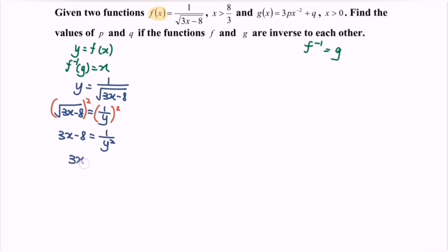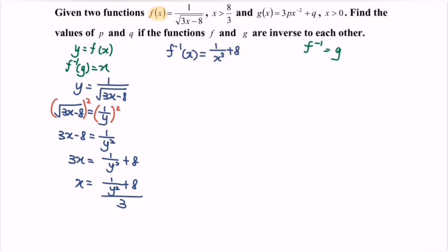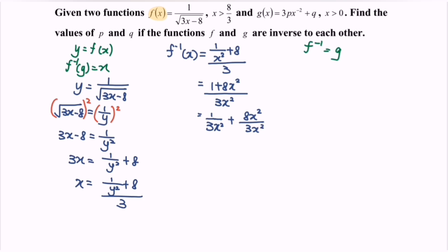Rearrange the situation: 3x is equal to 1 over y squared plus 8. Then x is equal to 1 over y squared plus 8 over 3. So the f inverse is equal to 1 over x squared plus 8 over 3. Rewriting with a common denominator, we get 1 over 3x squared plus 8x squared over 3x squared. Finally, f inverse of x is equal to 1 over 3 times x to the power negative 2 plus 8 over 3.